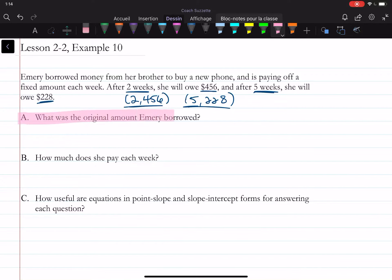Part A. What was the original amount Emory borrowed? Well, that corresponds to the y-intercept.